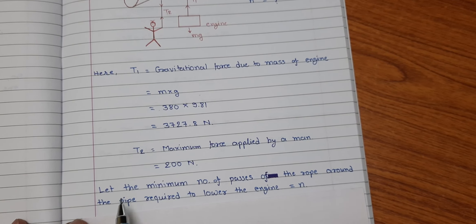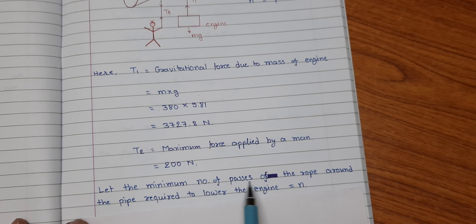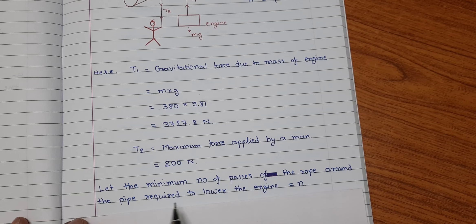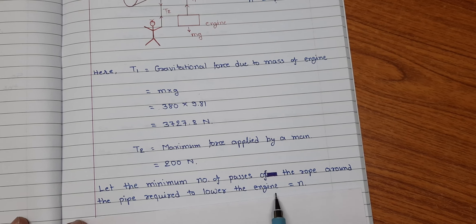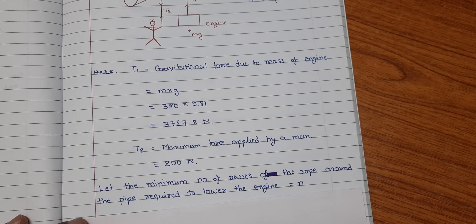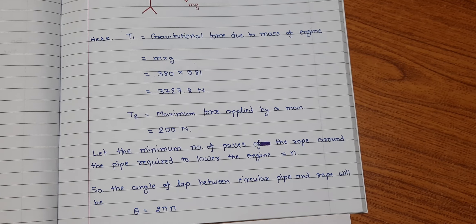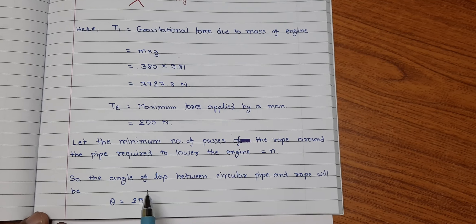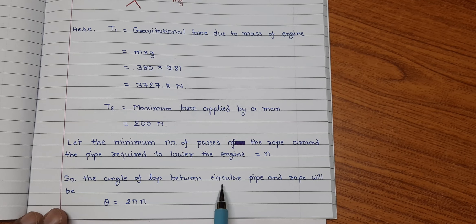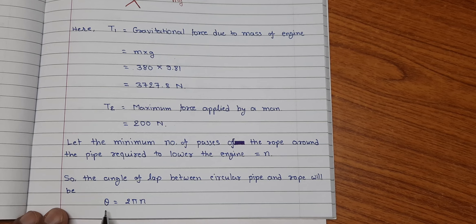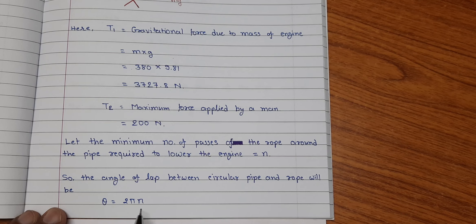Now, let the minimum number of passes of the rope around the pipe required to lower the engine is equal to N. So, the angle of lap between the circular pipe and the rope will be theta is equal to 2 pi N.